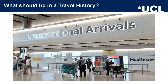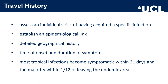So what should be in a travel history? The whole concept of a travel history — similarly to a sexual history — is to assess an individual's risk of having acquired a specific infection, and to try to establish an epidemiological link between the presentation and the traveller's history. You want to take a detailed geographical history, as detailed as town, city, county, country, modes of travel, where they stayed, with whom, and activities undertaken. It needs to be quite forensic in your approach.